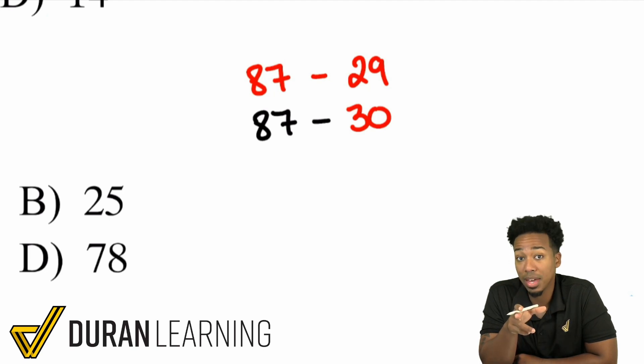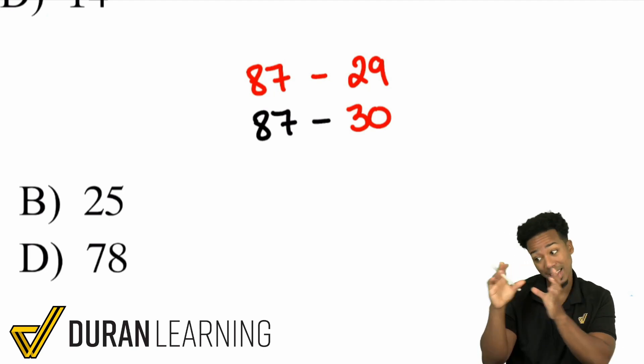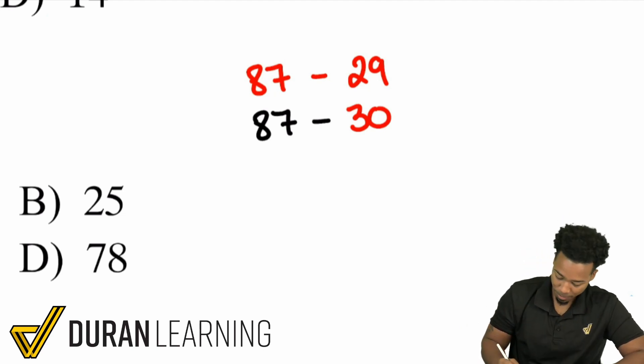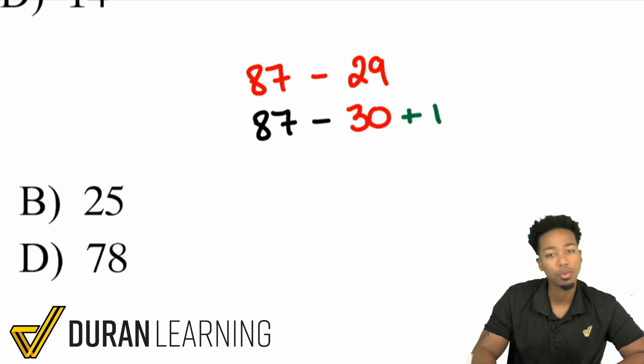And so if I do that all I'm going to do is if I estimate it to the 30 compensate by adding one back. Because again if I take away 30 instead of 29 I took away too much and so I'll just add one back.